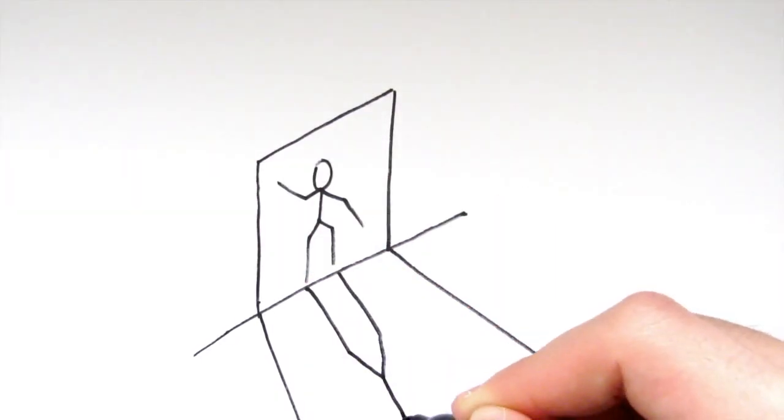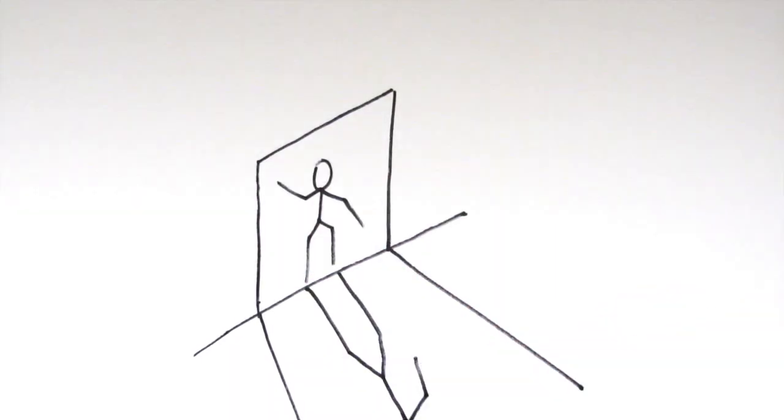But when light travels through a doorway, it casts a sharp shadow because the waves have only diffracted a tiny little bit.